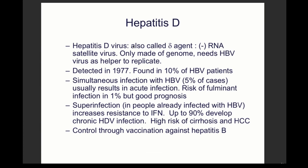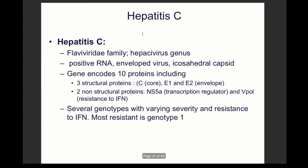Hepatitis D virus is not a true virus — it is a satellite virus. It cannot infect without hepatitis B being present, as it uses the hepatitis B nucleocapsid. Co-infection with hepatitis D increases the risk of cirrhosis and hepatocellular carcinoma. It is controlled through vaccination against hepatitis B.